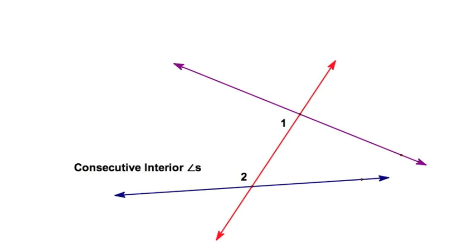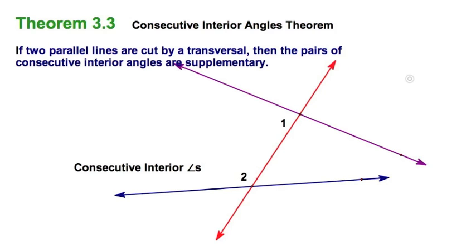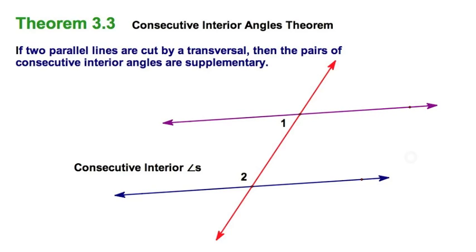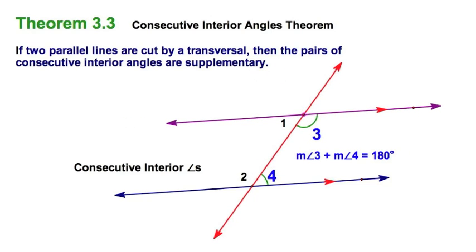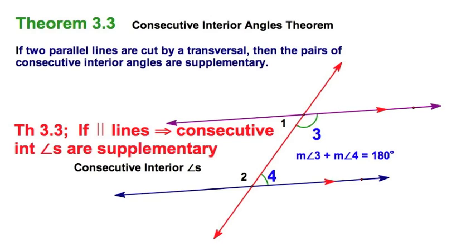Our final pair of theorems covers consecutive interior angles, such as angles one and two. This is a little bit different. Theorem 3.3: if two lines are parallel — let's make those blue and purple lines parallel — then I can conclude that angles one and two are supplementary, or angles three and four are supplementary. These angles are not congruent; they could be in the case of right angles, but generally they're not.